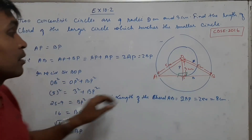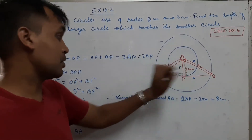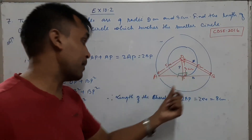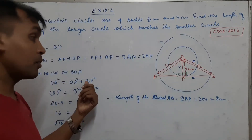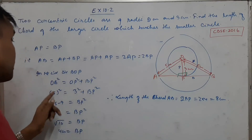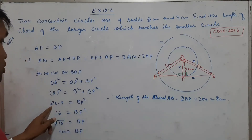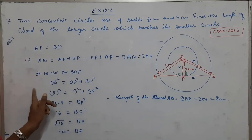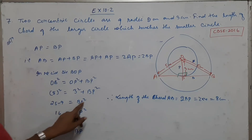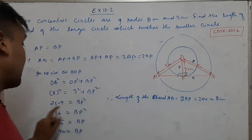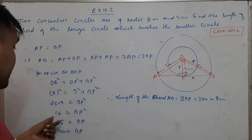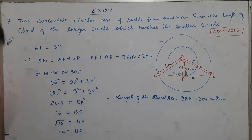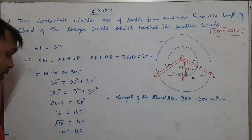Question number 8: A quadrilateral ABCD is drawn to circumscribe a circle — meaning the circle is inside and the quadrilateral is outside, touching it externally. Prove that AB plus CD equals AD plus BC, meaning the sum of opposite sides are equal. Given: ABCD is a quadrilateral which circumscribes a circle with center O.